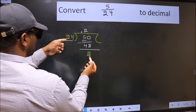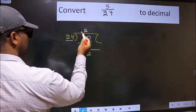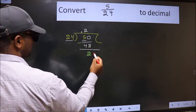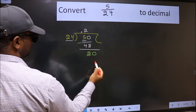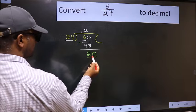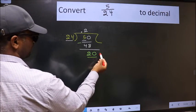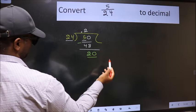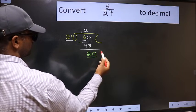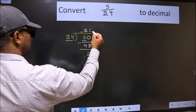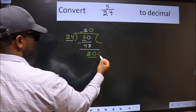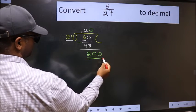2 smaller than 24. And we already have the decimal. So this time we can directly take 0. 20 is smaller than 24. We cannot take 0 again. So to get 0, what we should do is put 0 here to get 0 here. So 200.